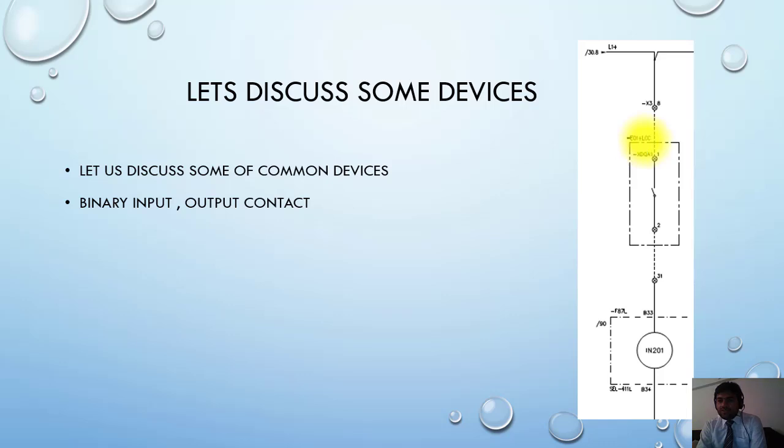One auxiliary contact - when it's closed, it will energize this binary input. For example, if I configure this contact when the breaker is closed, so this will close and I will get the signal in the relay to ensure that breaker is closed. So in this way this drawing will work.